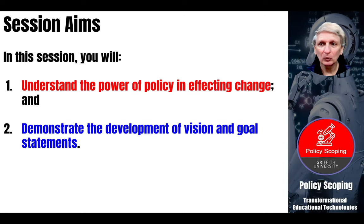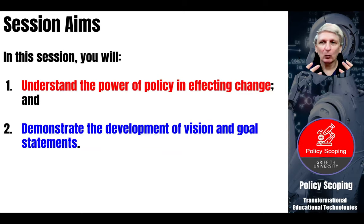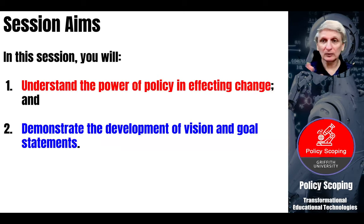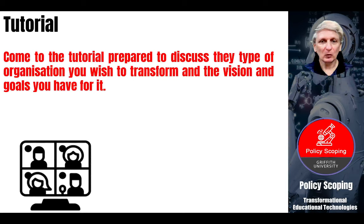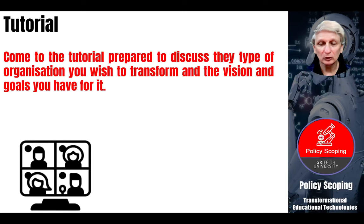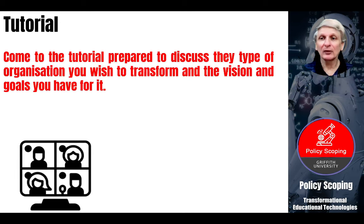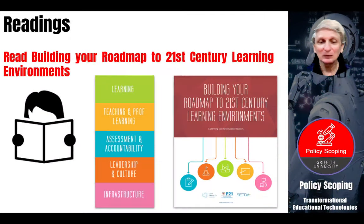In terms of your next portfolio item, we're going to be looking at the development of vision statements and goal statements — setting out what you want to achieve through your transformation process and why it's important to set those visions, to have them articulated, and ideally have them developed through a consensus approach. To start things off, we're going to be in our tutorial looking at the transformation you want to achieve and the vision you have for your organisation and the goals related to that. And to prepare for that, there are some readings for you to explore.